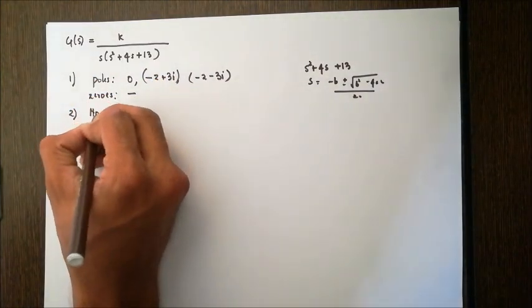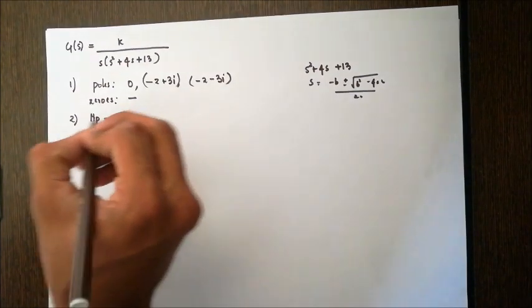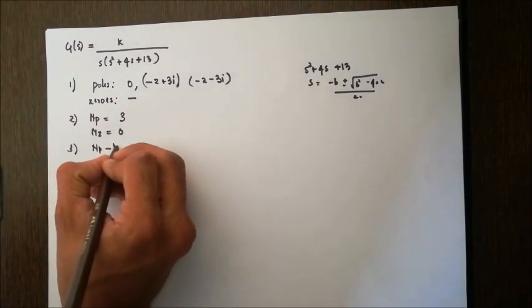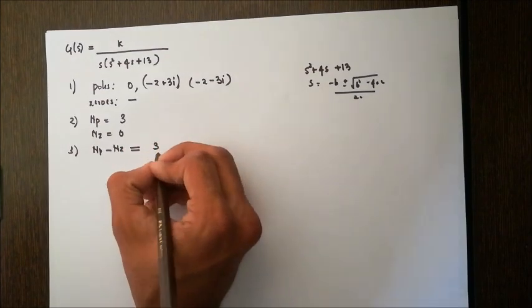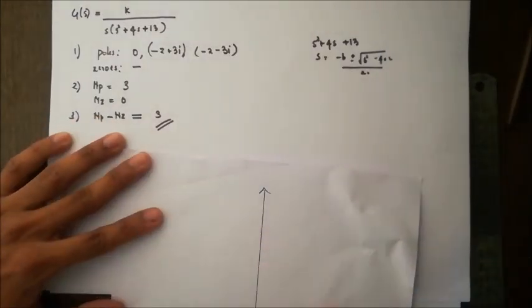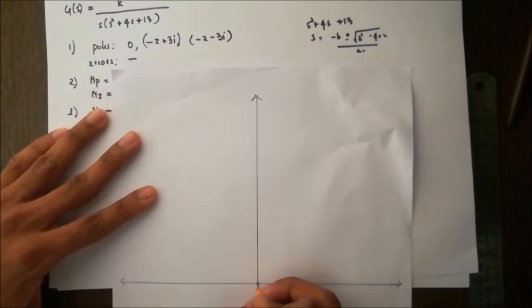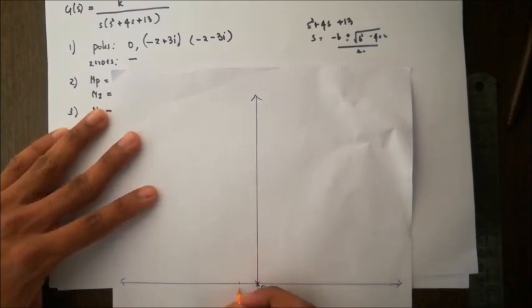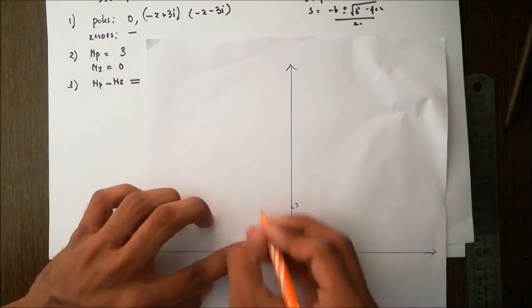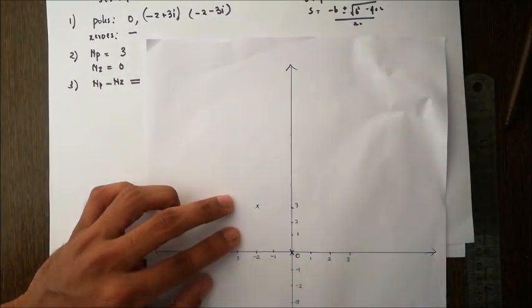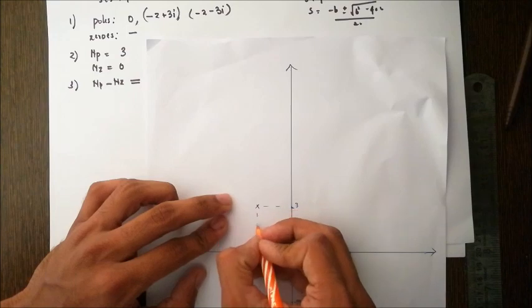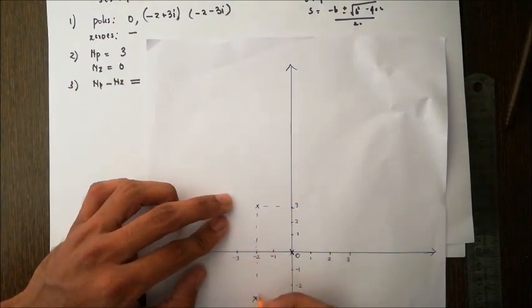Next, we find the number of poles, which is 3, and number of zeros is 0. From that, we obtain the number of asymptotes: Np - Nz = 3 - 0 = 3. I will quickly mark these poles on a separate sheet of paper. One pole is at 0, and the other poles are at -2 + 3i and -2 - 3i. So I've marked the poles.